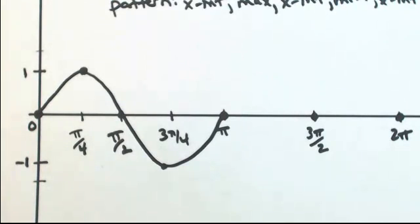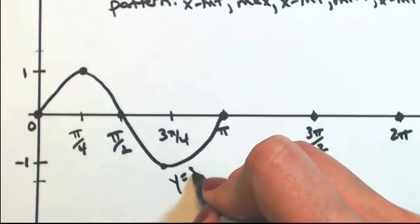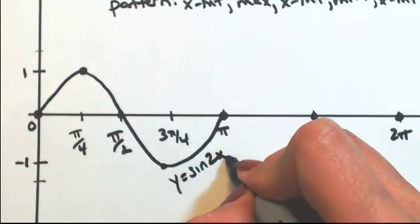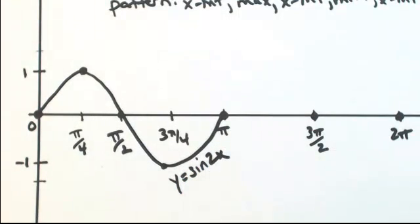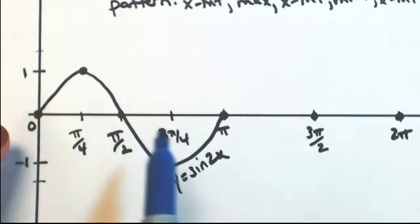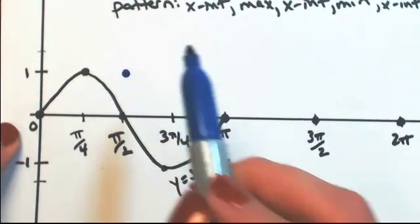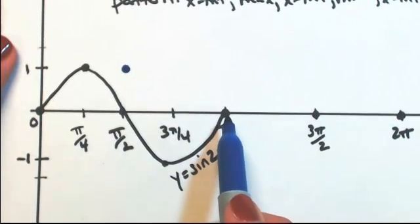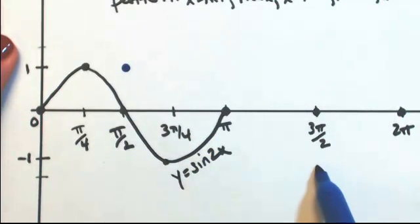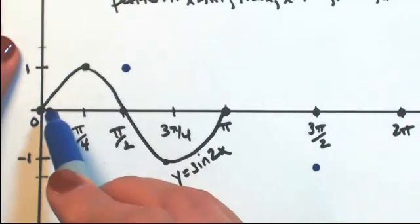So what I want to do is look at just y equals sine of x, see how these compare. So this was y equals sine 2x. So y equals sine x. At pi over 2, we had our max. At pi, we had the x-intercept. And then at 3 pi over 2, we had our min, back to an x-intercept.